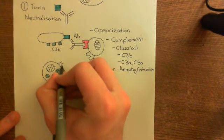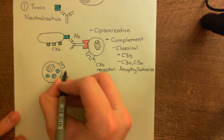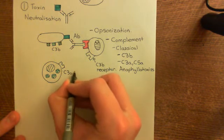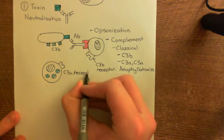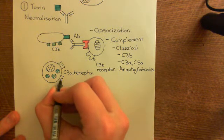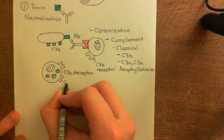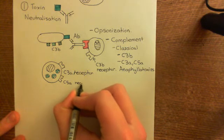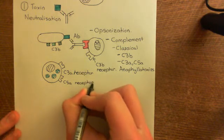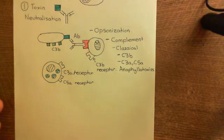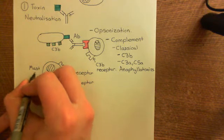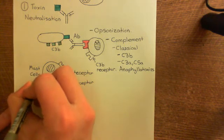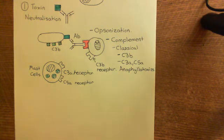These mast cells have C3A receptors and C5A receptors on their surface. C3A will bind to its C3A receptor, and C5A will bind to its C5A receptor on the surface of the mast cell, and they'll trigger the degranulation of the mast cells, which releases histamine into the interstitial fluid, which then positively feeds back on the inflammatory response.